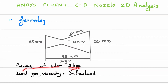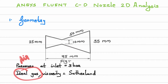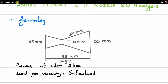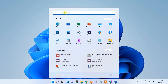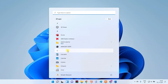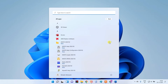In this analysis we are going to consider pressure at inlet as 3 bar. Flow will be from left to right and we are going to consider ideal gas air — so air will be flowing inside the nozzle. Viscosity we are going to consider Sutherland. These are the things you need to note. Now we'll go to the software part.